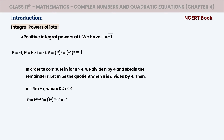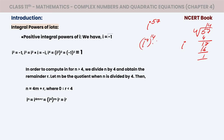For example, i⁵⁷: divide 57 by 4 — 4 × 14 = 56, remainder 1. So i⁵⁷ = (i⁴)¹⁴ × i¹ = 1 × i = i. The remainder when dividing the exponent by 4 becomes the new power of iota. Clear?